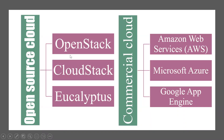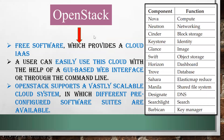Entering into open-source cloud, you have three types: OpenStack, CloudStack, and Eucalyptus. For commercial cloud, you have Amazon Web Services, Microsoft Azure, and Google App Engine. Coming into open-source cloud like OpenStack, you have a number of components with their functions — for example, a component called Searchlight has the function of searching the simulator. OpenStack provides infrastructure as a service and is free software, where the user can easily access the cloud through a graphical user interface and use components based on what function they require. OpenStack supports complete large-scale scalability of the cloud system, with different software and components available based on their functions.